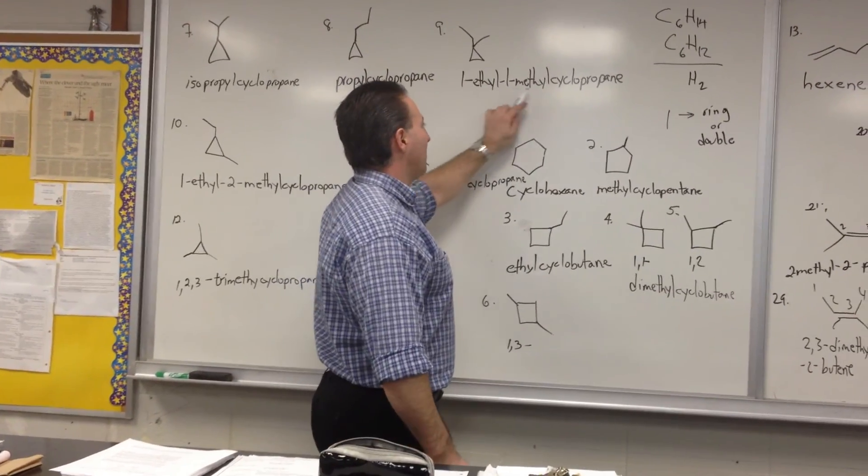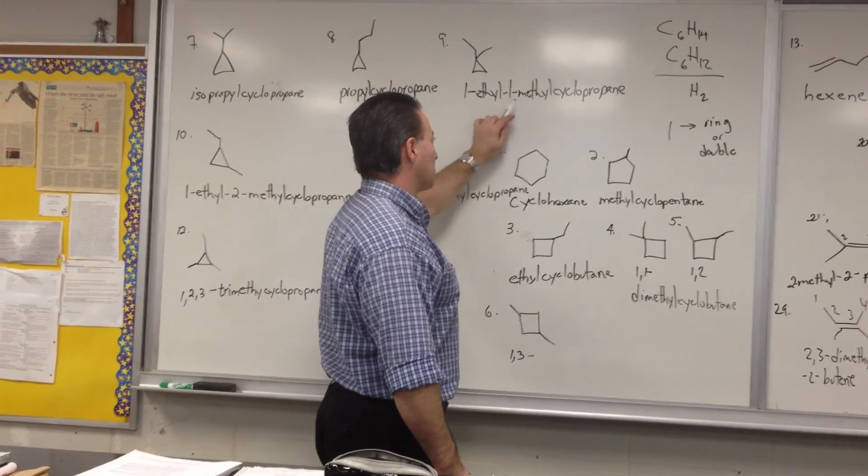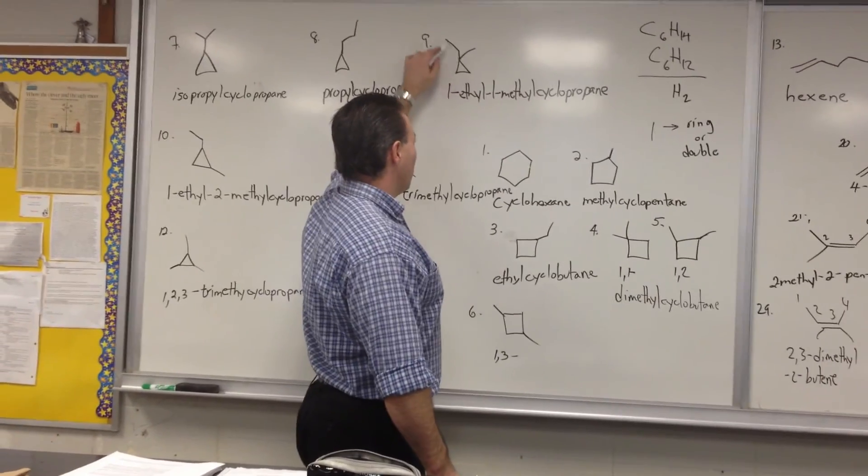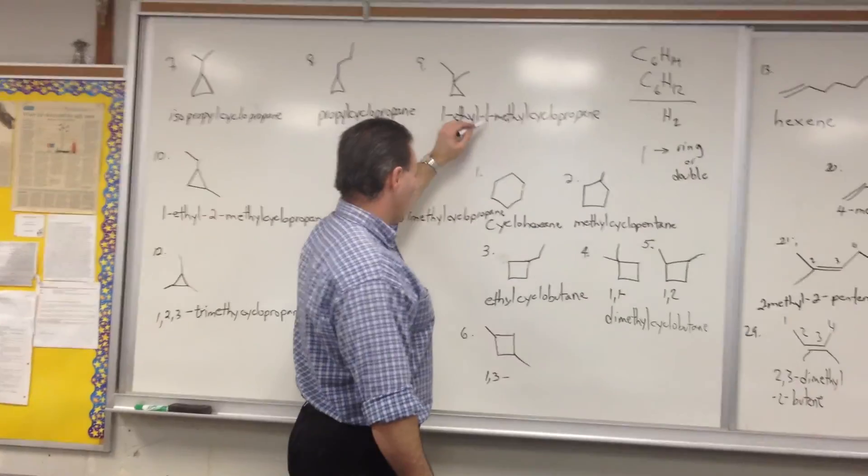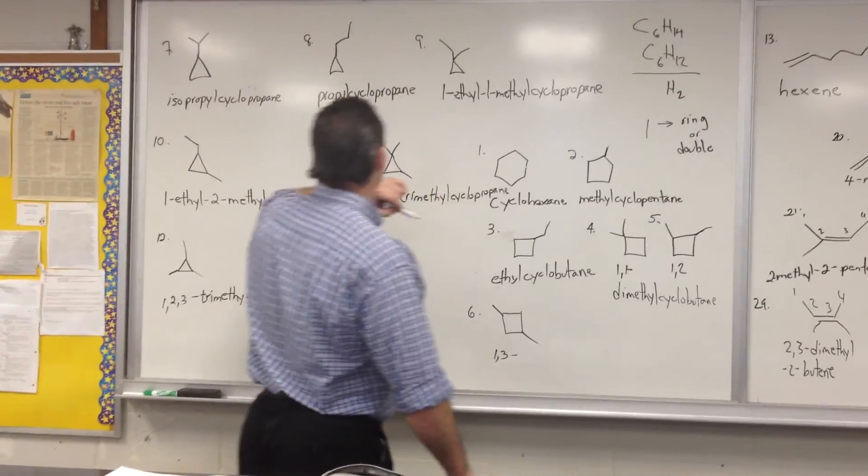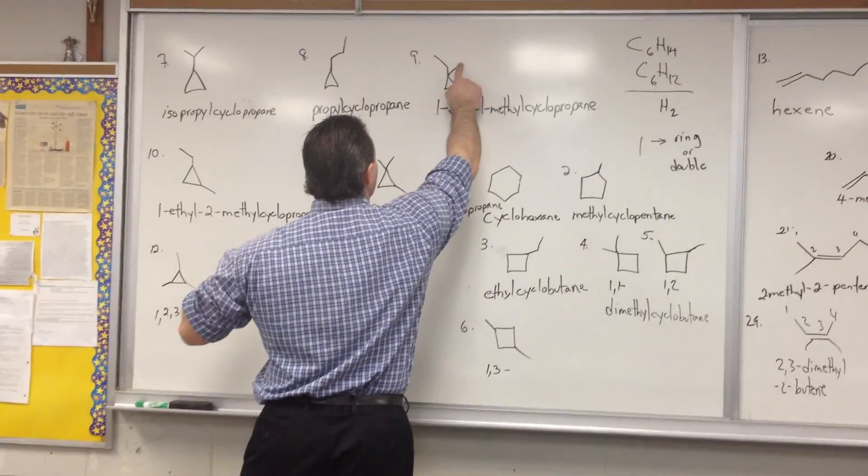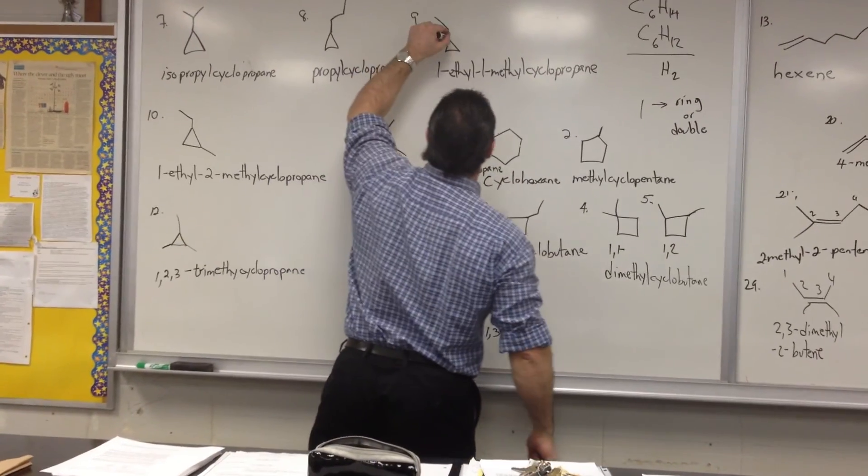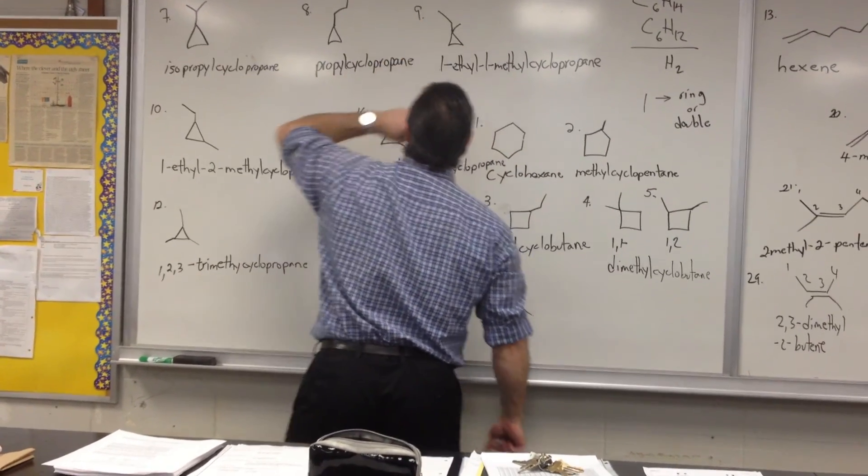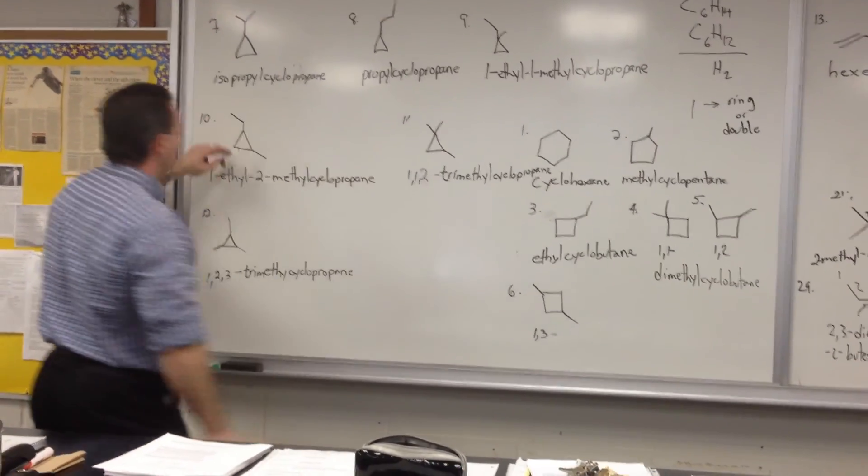Then we move to propylcyclopropane, 1-ethyl-1-methyl. Notice how I've alphabetized the substituents. E comes before M. So they're in the same position. That's why it says 1,1. Then we start moving the substituents around. That's 1-ethyl-2-methyl.